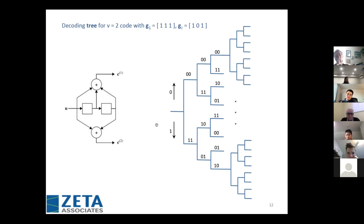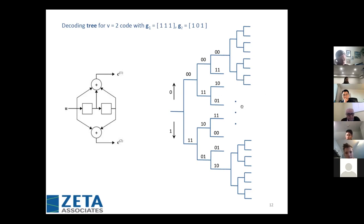With the Fano decoder, you receive the codeword from the channel output — let's talk about hard decisions. If there are only a few errors, you can make it through the tree using Hamming distance comparisons. But when there are a lot of errors, you find yourself trapped — things aren't looking good — and you have to back up. That's what the Fano algorithm does. It's an ingenious algorithm for navigating the tree, involving a dynamic threshold that helps you decide whether to back up.